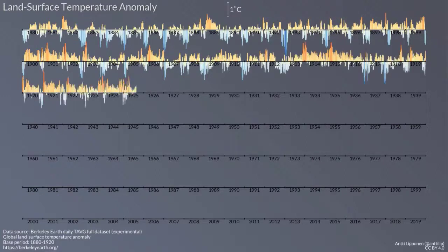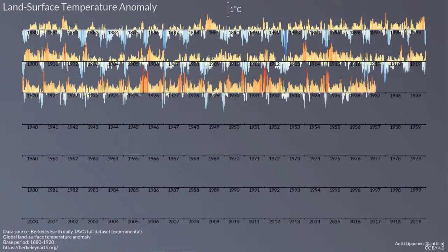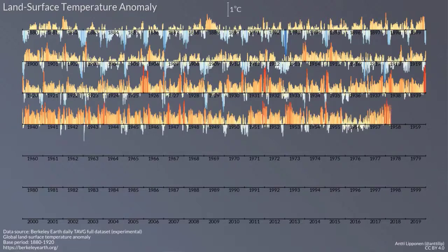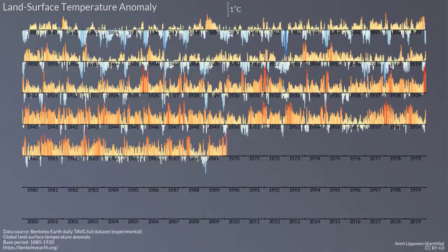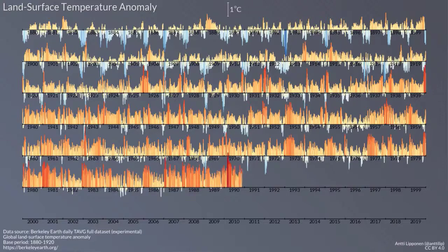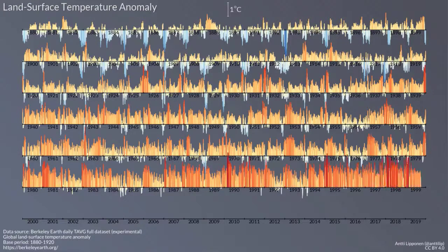There is a lot of variability occurring because of all of these natural processes, but what you'll see is that as you move through the 1920s, 1930s, and 1940s, you start to see that the number of cold anomalies actually disappears.